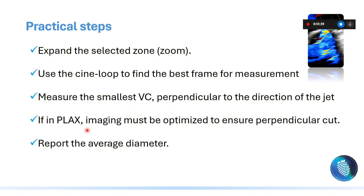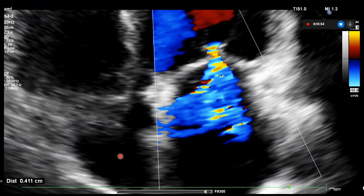Take care of the difference between these methods of assessment for both parameters. In the parasternal long axis view, imaging must be optimized to ensure perpendicular cuts. Finally, report the average diameter if you are using two perpendicular planes to assess the vena contracta.